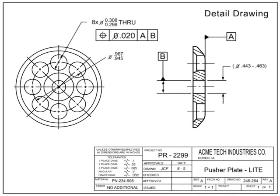Detail drawings can build on one another. For instance, a machinist could take an existing part and add or remove material to change its configuration. This type of drawing is called a modification drawing.